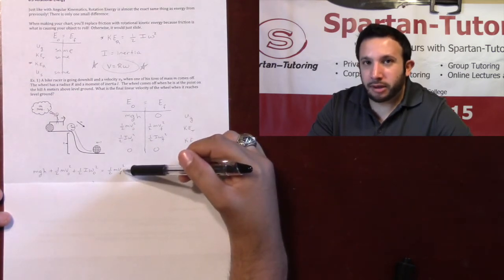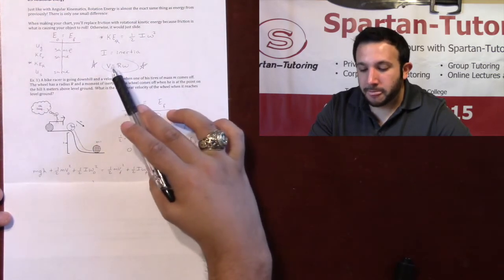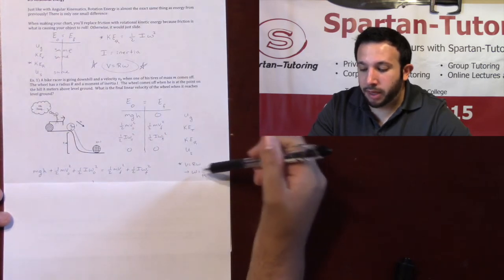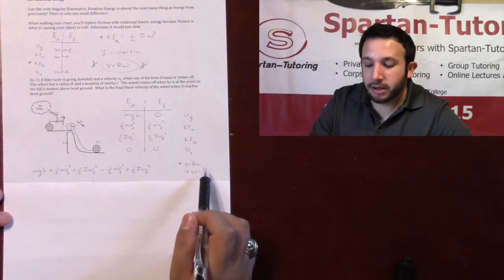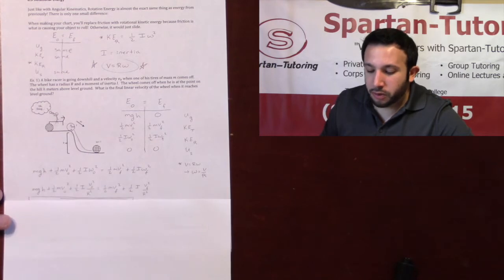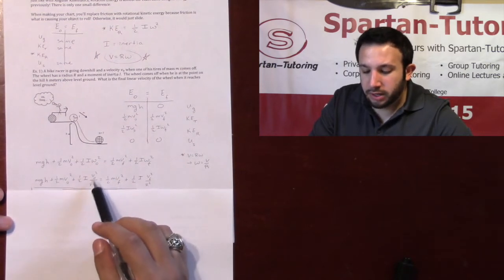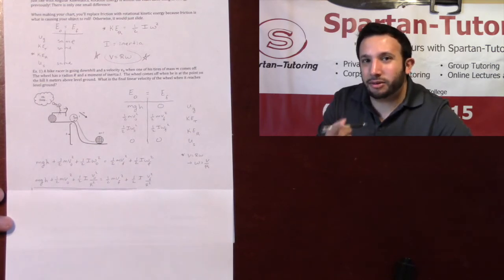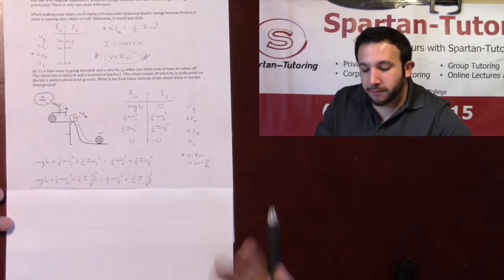That's where you utilize this relationship. If V equals R omega, I'm replacing every omega with V over R. So this omega naught is V naught over R. This omega F is VF over R. And so whenever I do that in squaring, right, this omega naught squared is V naught squared over R squared. This omega F squared is VF squared over R squared. And now you're left with that one unknown. You're left with that VF to be unknown.